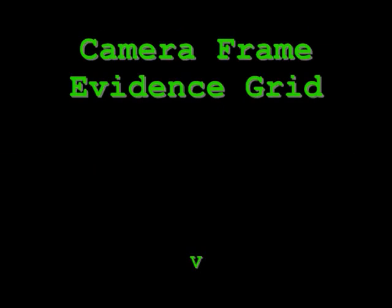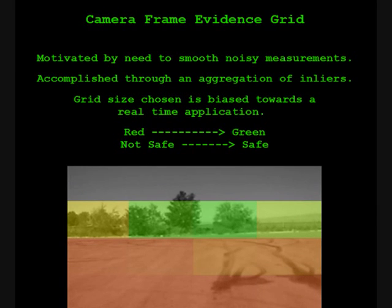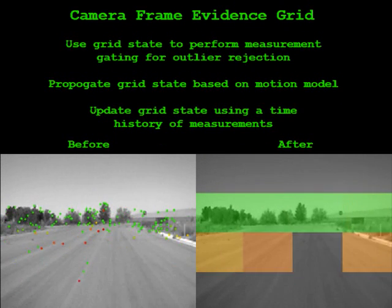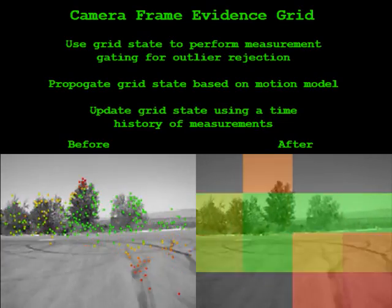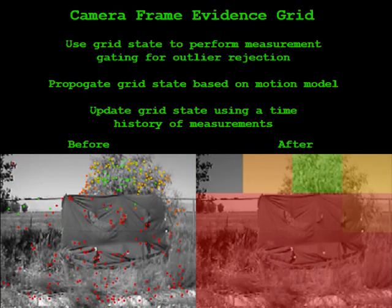Uncertainty in the measurements is dominated by pixel quantization and epipolar location errors. Handling of uncertainty is accomplished through the construction of a camera frame evidence grid. Grid cells define a time-to-collision state for which evidence is accumulated using measurements within the cell. Further outlier rejection is performed using measurement gating on each cell.